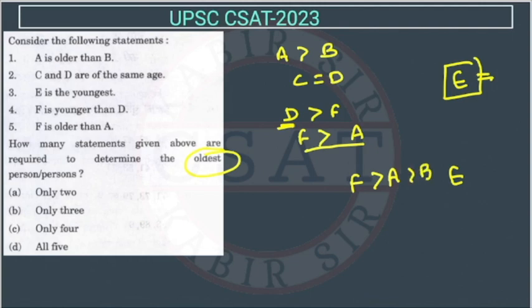And we also know that D is older than F, and C and D are of same age, so C will be here itself. So the oldest persons are C and D.